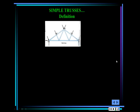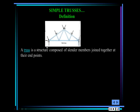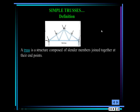We have to start with the definition of a truss. A truss is a structure composed of slender members joined together at their endpoints. However, you can have structures that look like trusses, seem like trusses, taste like trusses — but they are not trusses, because there are several conditions that must be met.